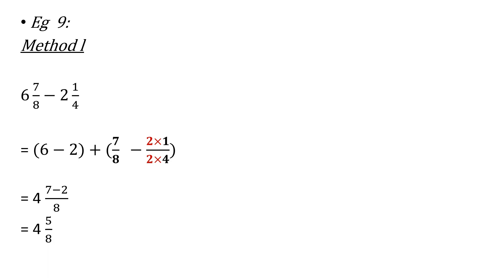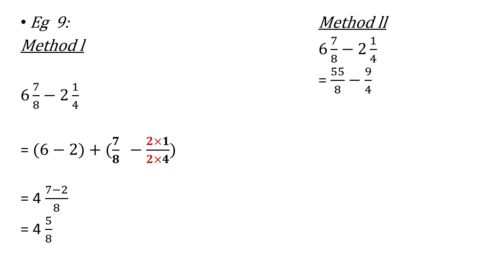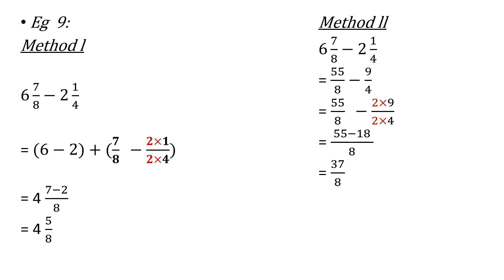The second method, using the same example: convert to improper fractions first. It becomes 55 over 8 minus 9 over 4. Then convert 9 over 4 to an equivalent fraction with denominator 8 by multiplying up and down by 2. You then get 55 minus 18 over 8, that is 37 over 8. Since 37 over 8 is an improper fraction, you convert it to the mixed number 4 and 5 over 8. That is how you do subtraction of mixed numbers.